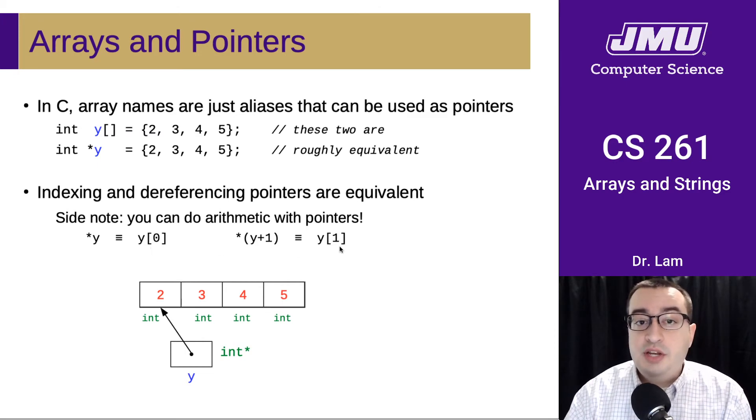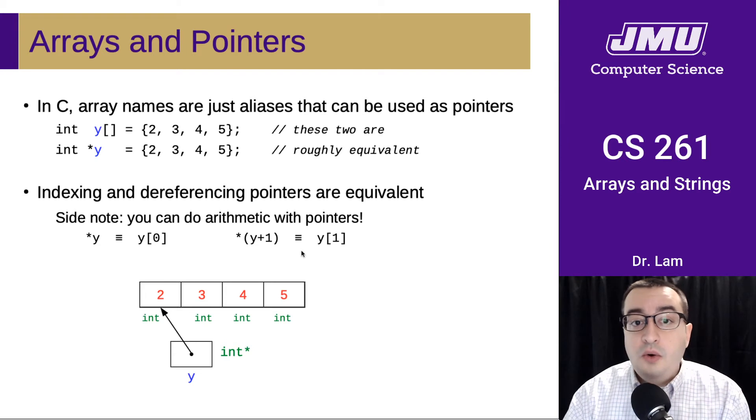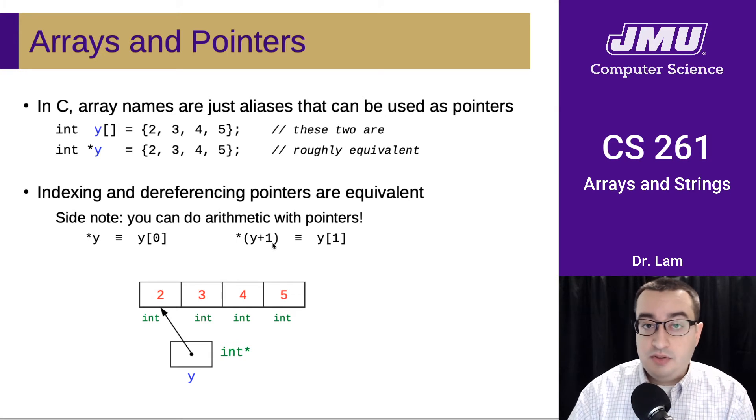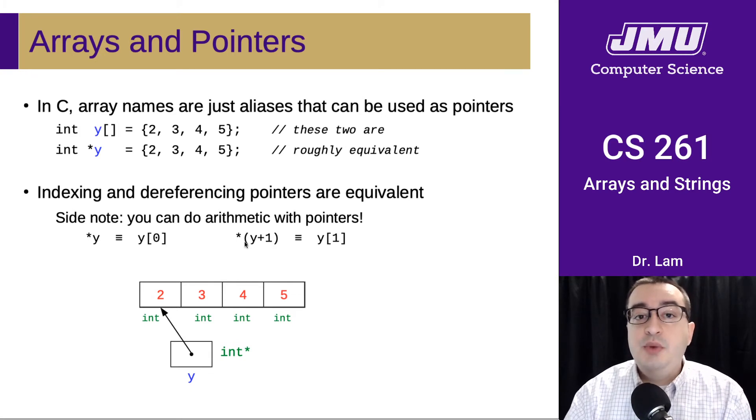Similarly, if we want to get the second element, we could use the indexing notation and access index one. Or we can take the pointer and add one element to it by saying Y plus one. This is actually called pointer arithmetic. Then we can dereference that pointer. When we add one to Y, we get a pointer to the next element in memory, and then we can dereference that.